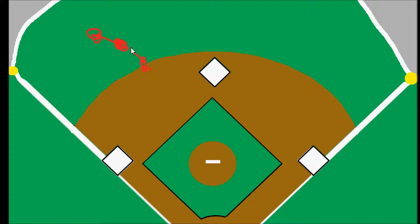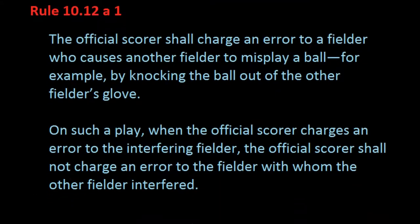The shortstop might run over, backing up, maybe doesn't see him, and he knocks the ball away. In this case, because the left fielder was parked underneath the ball, ready to catch it, and it was the shortstop that knocked into it, we would charge the error to the shortstop. He did the colliding — it was him who knocked the ball out of the other fielder's glove and caused that misplay.